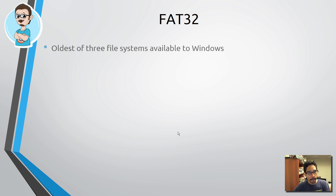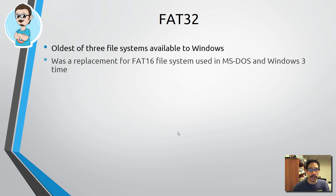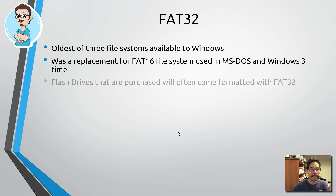FAT32. It's the oldest of the three file systems available within Windows. It was a replacement of the FAT16 file system used for MS-DOS and Windows 3 — that's a long time ago.